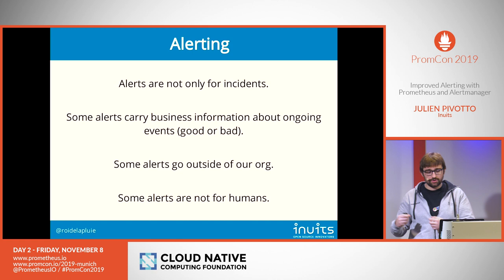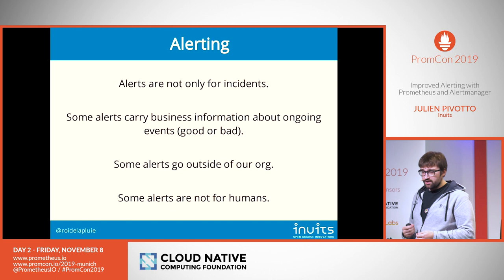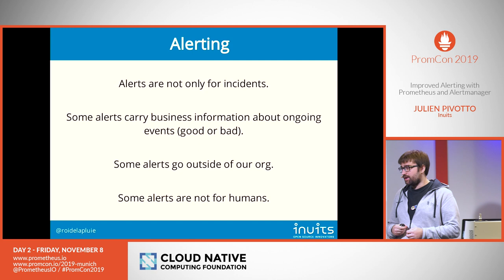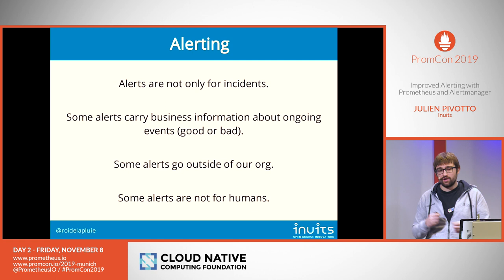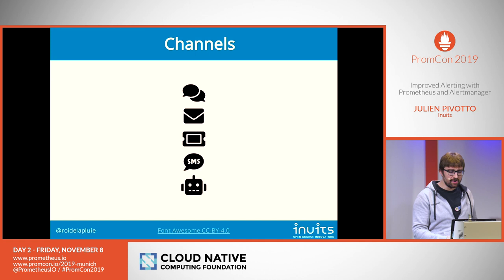Some alerts are not just for humans. Sometimes you have an event and you could tell humans to run a runbook, but there's no added value in waking up at 3am just to launch an Ansible playbook that will solve the issue quickly. So we send alerts via chat, email, we create tickets in the customer's ticketing system, we send SMSs, and we also send notifications to a robot.